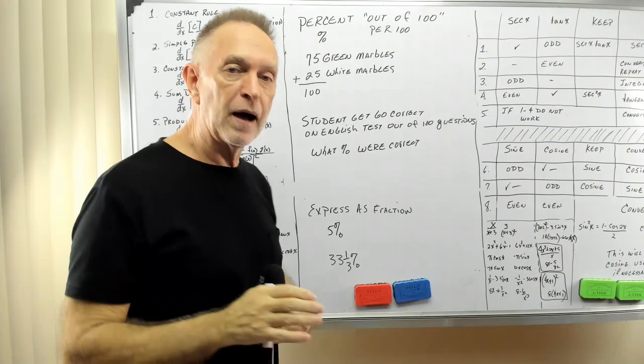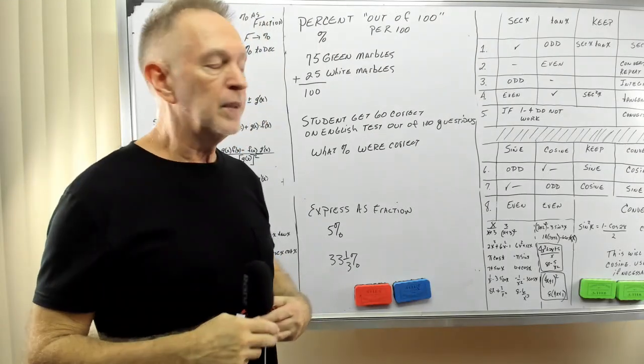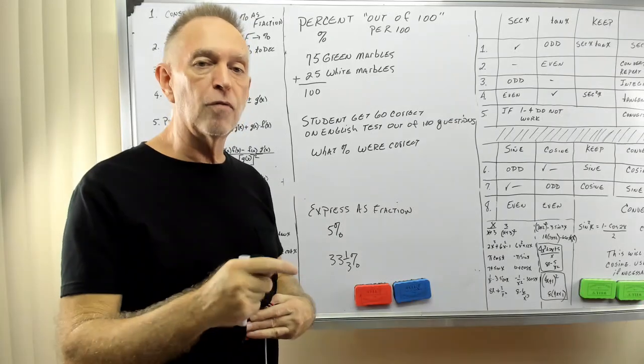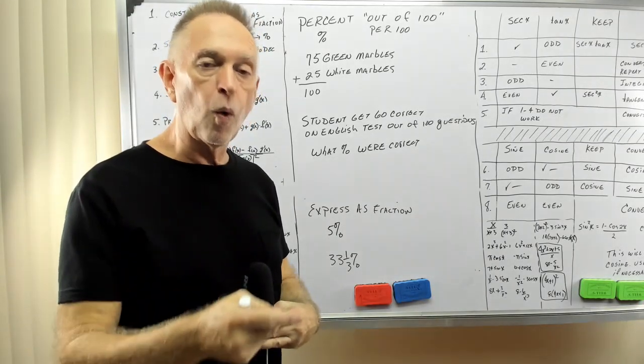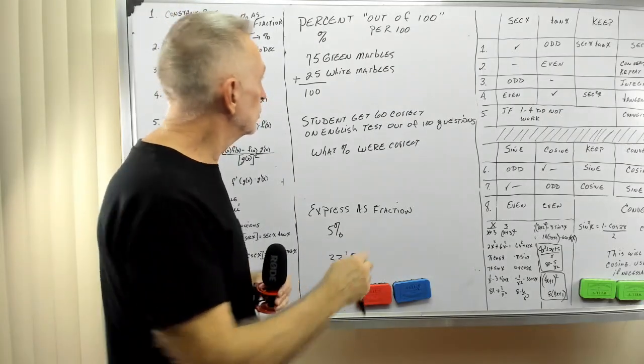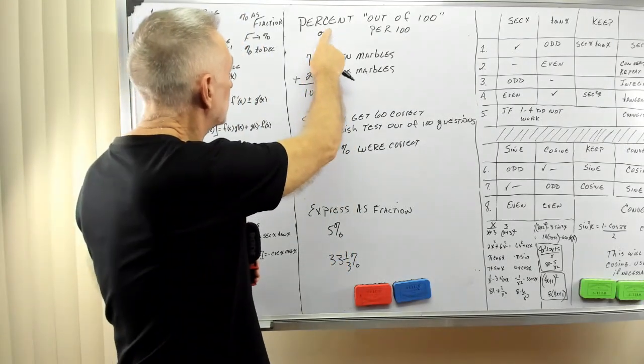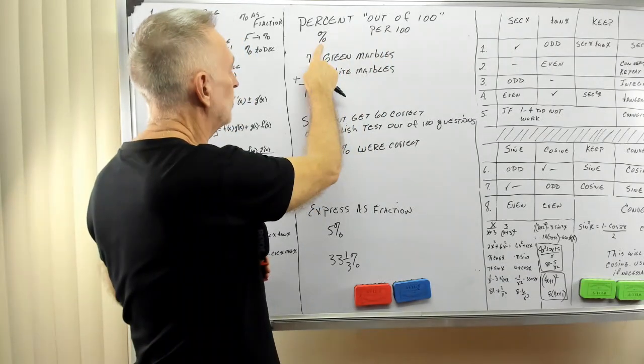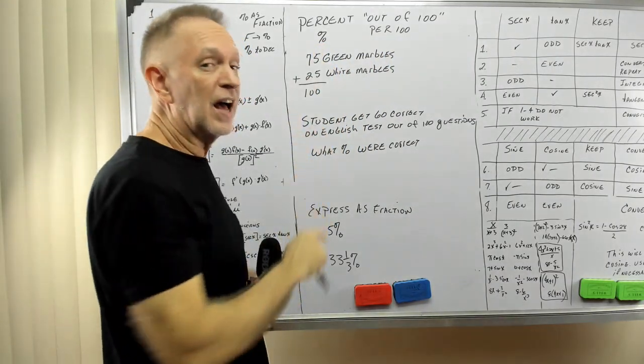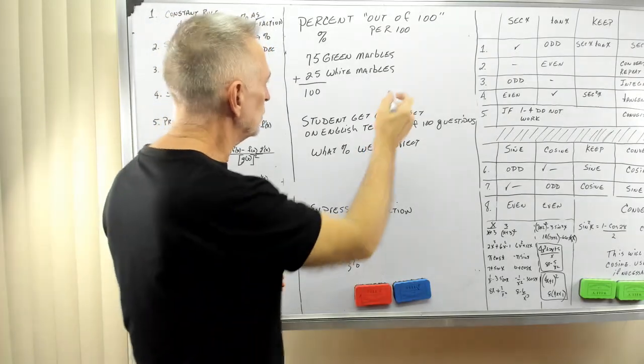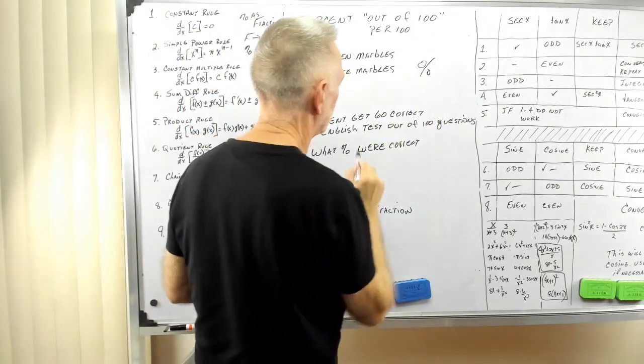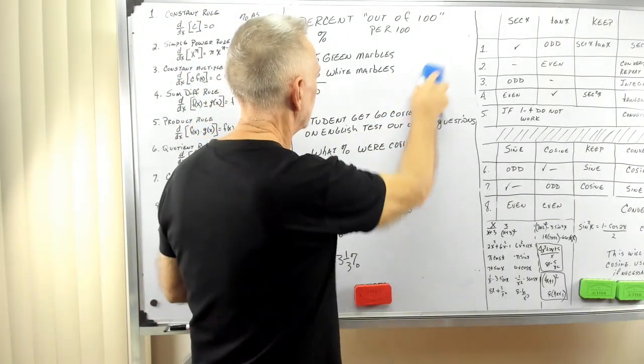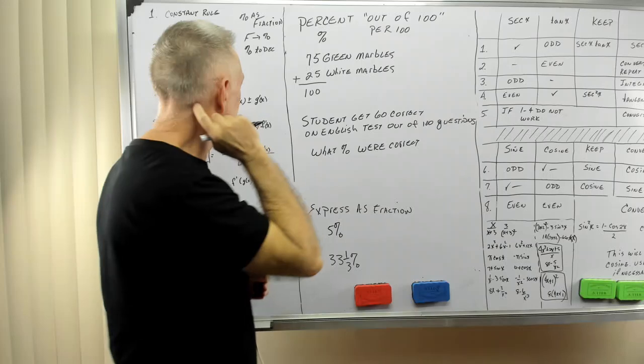We're talking about percent, and the word percent means out of 100 or per 100. It's denoted by this funny looking little sign here. Some people may make it a little different than I do. They may have two zeros with a line in between, but I make mine like that.